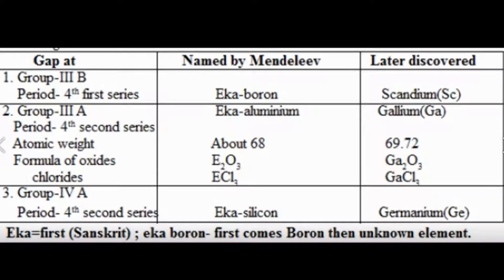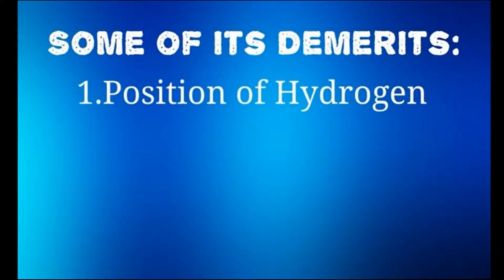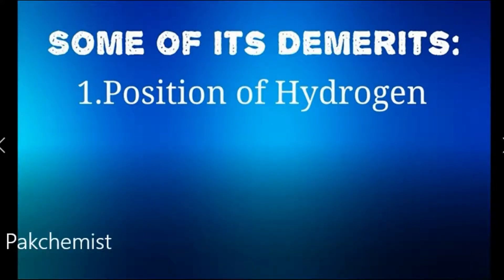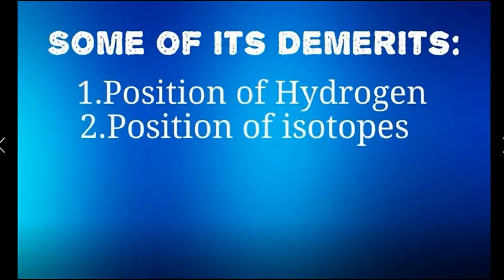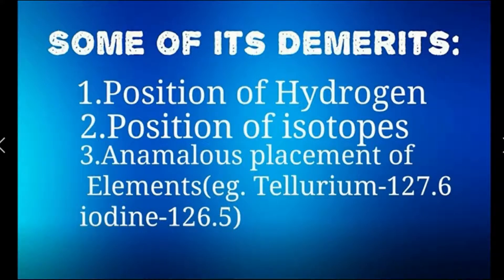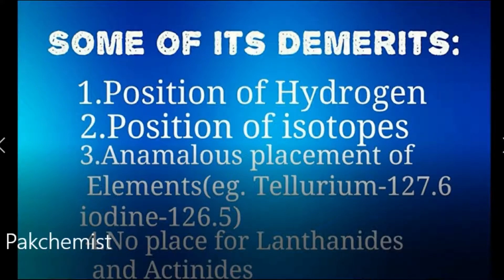Now what are some demerits of Mendeleev table? Number one, position of hydrogen. Hydrogen resembled both alkali metals and halogens, इसलिए hydrogen की position clear नहीं थी table में. Second, position of isotopes - isotopes की placement नहीं की गई table में. Tellurium and iodine - वैसे तो tellurium को आना चाहिए iodine के बाद, लेकिन इस table में tellurium को पहले रखा गया. No place for lanthanides and actinides in his table.